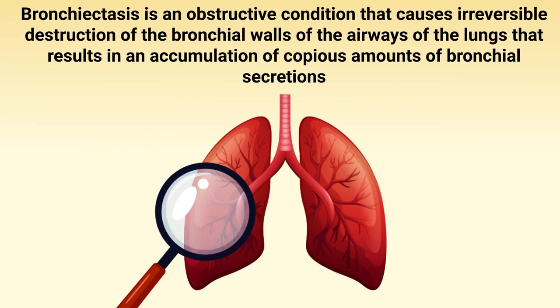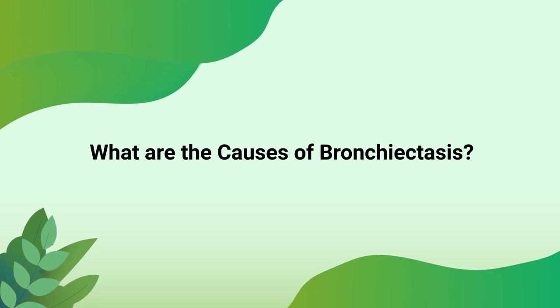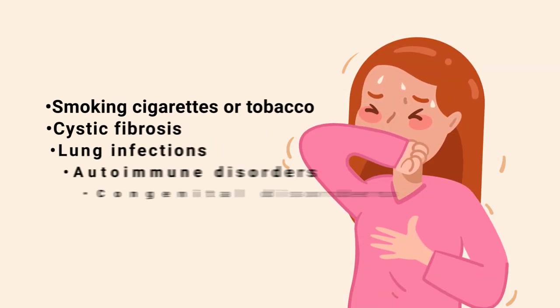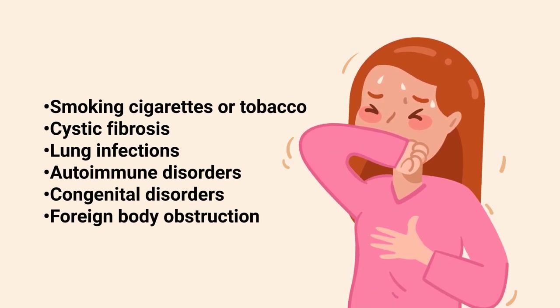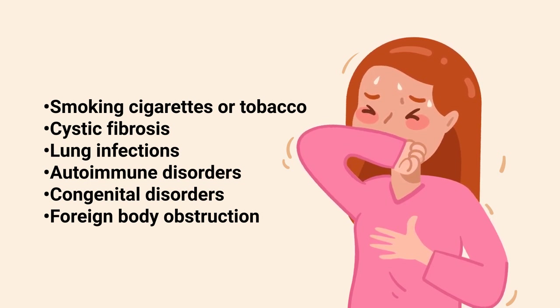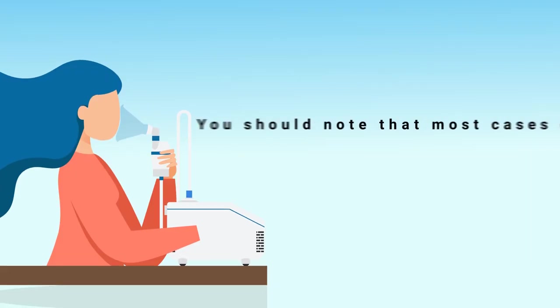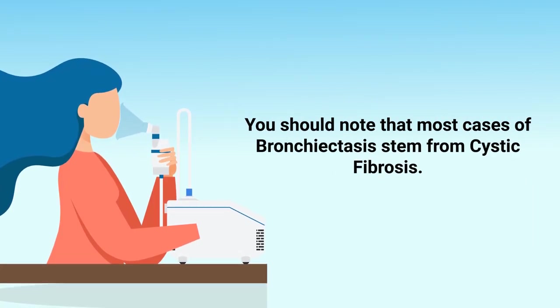Bronchiectasis is an obstructive condition that causes irreversible destruction to the bronchial walls of the airways of the lungs, resulting in an accumulation of copious amounts of bronchial secretions. The most common causes include smoking tobacco or cigarettes, cystic fibrosis, lung infections, autoimmune disorders, congenital disorders, and a foreign body obstruction. Note that most cases of bronchiectasis stem from cystic fibrosis.